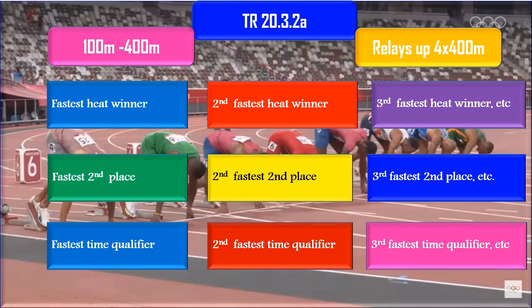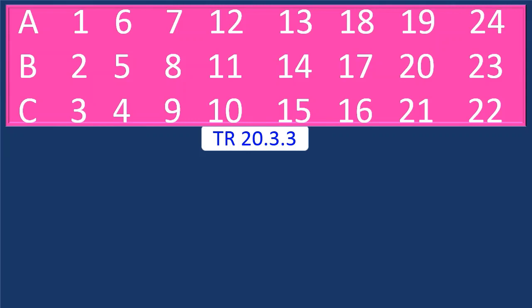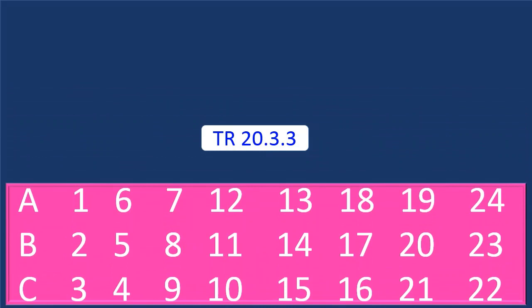To seed the athletes in the semi-final, we have to employ Technical Rule 20.3.3. The rule states the athletes shall then be placed in heats in the order of seeding and zigzag distribution. For example, 3 heats will consist of the following seeding. This is the zigzag distribution graph.